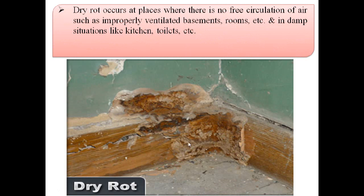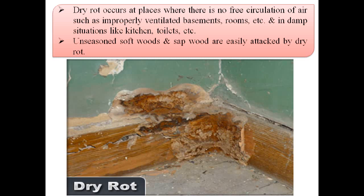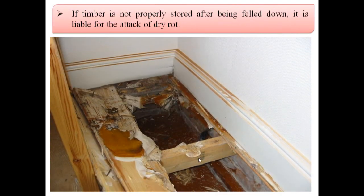This dry rot occurs at places where there is no free circulation of air, such as improperly ventilated basements, rooms etc. It also occurs in damp situations like kitchens, toilets etc. Unseasoned soft woods and sap wood are easily attacked by this dry rot. If timber is not properly stored after being felled down, it is liable for the attack of dry rot.